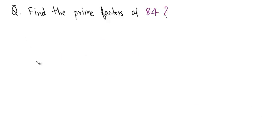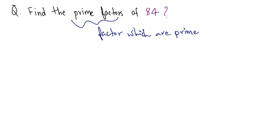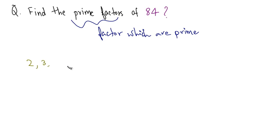Let's go ahead and find the prime factors of 84. Prime factors of any number are the factors of that number which are prime. One way would be to find all the factors of 84 from 1 to 84 and then pick those which are prime. But the better way is to find all the prime numbers which can divide into 84, starting from the lowest prime number, 2, and working upward.